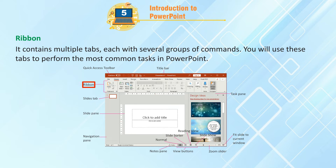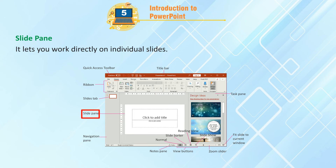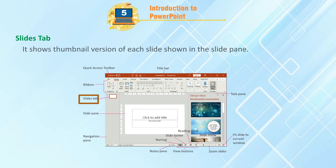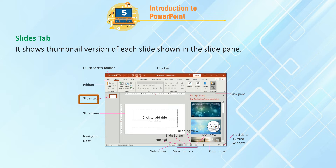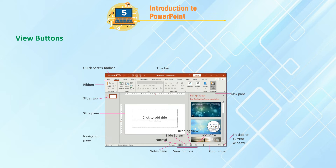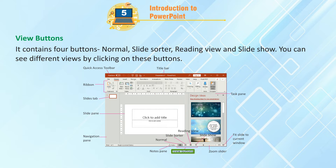Ribbon: It contains multiple tabs, each with several groups of commands. You will use these tabs to perform the most common tasks in PowerPoint. Slide Pane: It lets you work directly on individual slides. Slides Tab: It shows a thumbnail version of each slide shown in the slide pane. View Buttons: It contains four buttons — Normal, Slide Sorter, Reading View, and Slideshow — allowing you to see different views.